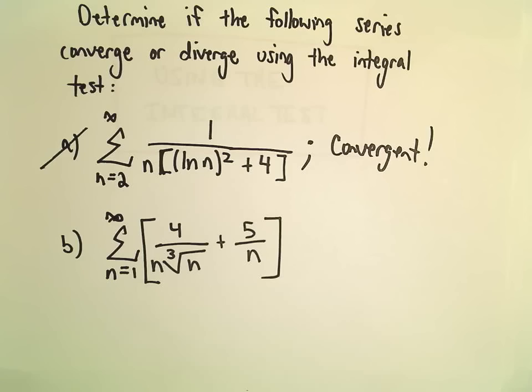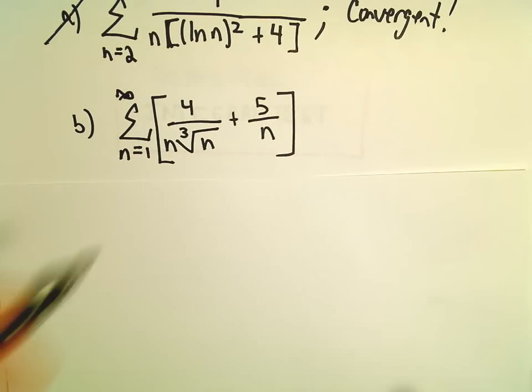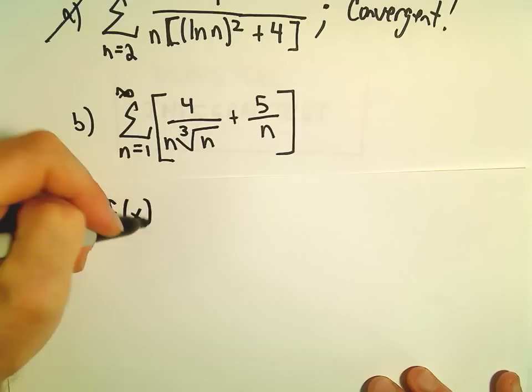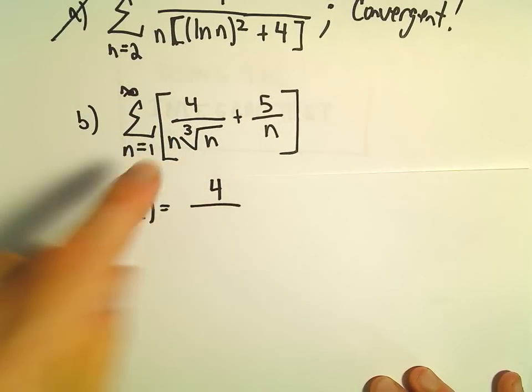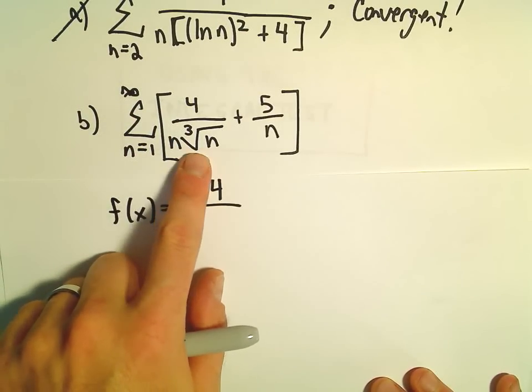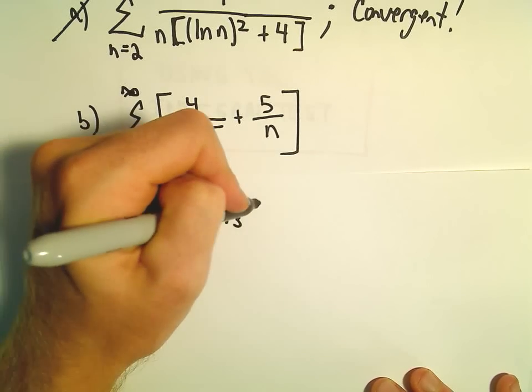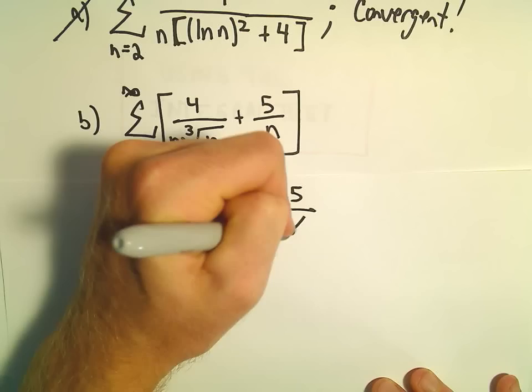So the first thing I'm going to do is write down the associated function. I'm going to think about the function f of x equals 4, so we would have x times the cube root of x, so x to the first times x to the one-third. That would give us x to the four-thirds, and then 5 over x.